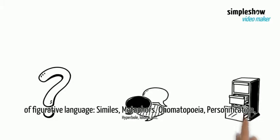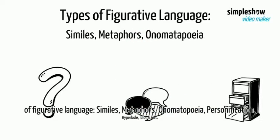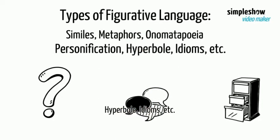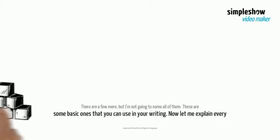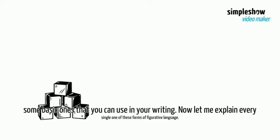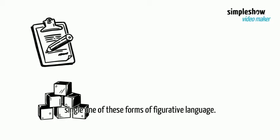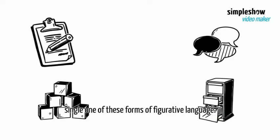There are different types of figurative language: similes, metaphors, onomatopoeia, personification, hyperbole, idioms, etc. There are a few more, but I'm not going to name all of them. These are some basic ones that you can use in your writing. Now let me explain every single one of these forms of figurative language.